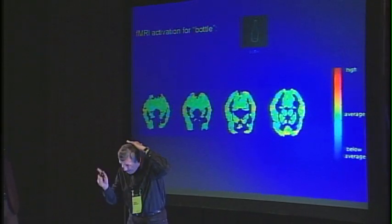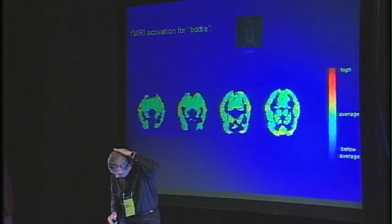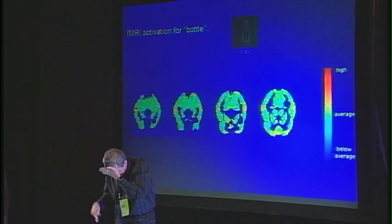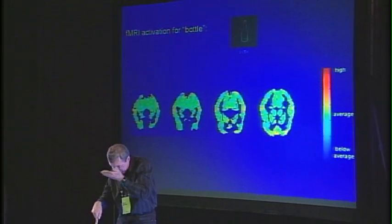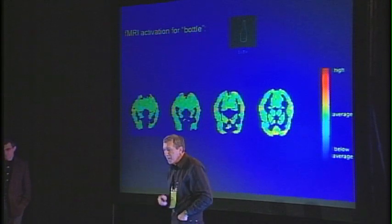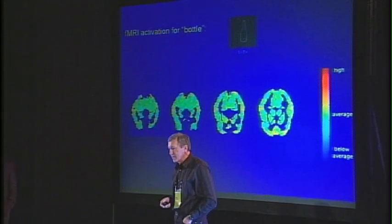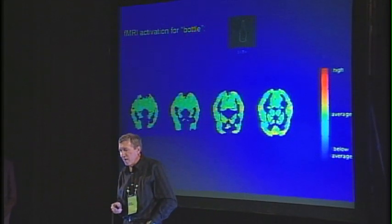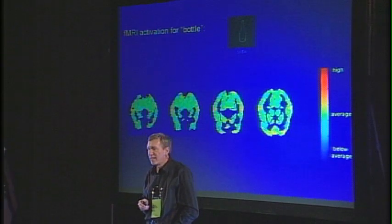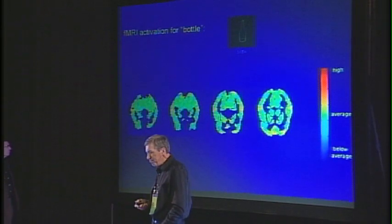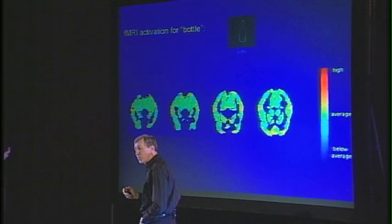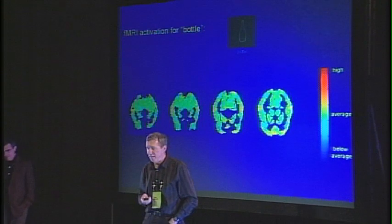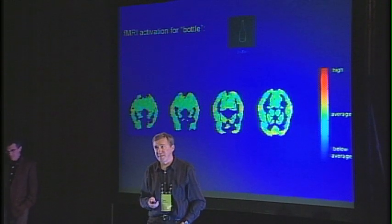The way you read this is: the top of the picture is the back of the head, and the bottom of the picture is the front of the head. As the thermometer here shows, redder areas are more activated, and that's what the activation looks like when somebody thinks about a bottle — at least one person.